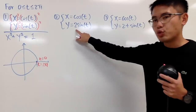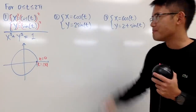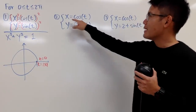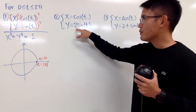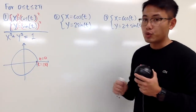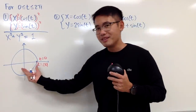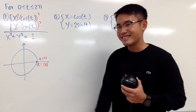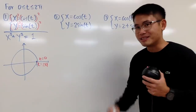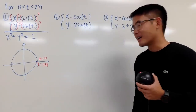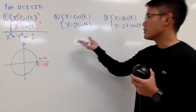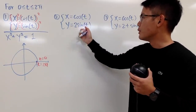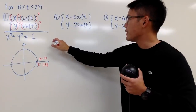Now let's talk about the next one. The only difference is we have a 2 in front of sin(t), so x = cos(t) and y = 2sin(t). The x values are still cosine, but the y values get multiplied by 2, so you stretch the y values by a factor of 2. This gives you a vertical ellipse. To convert to Cartesian form, divide both sides of the second equation by 2.